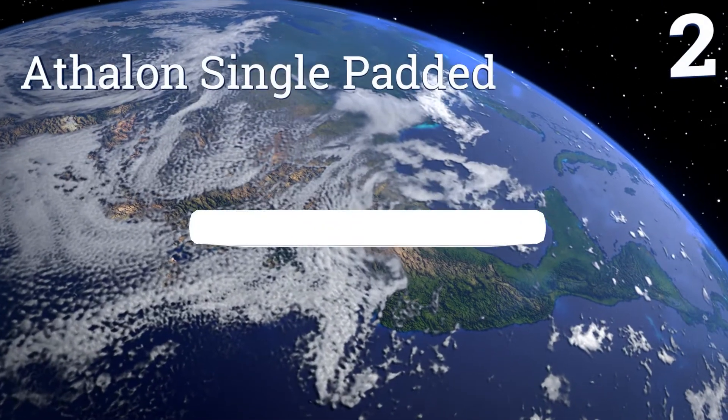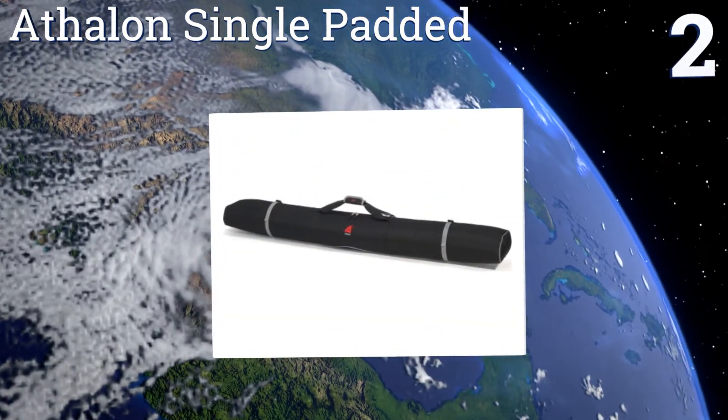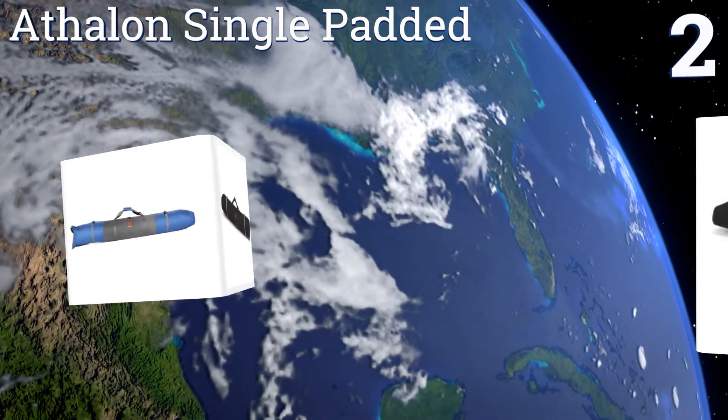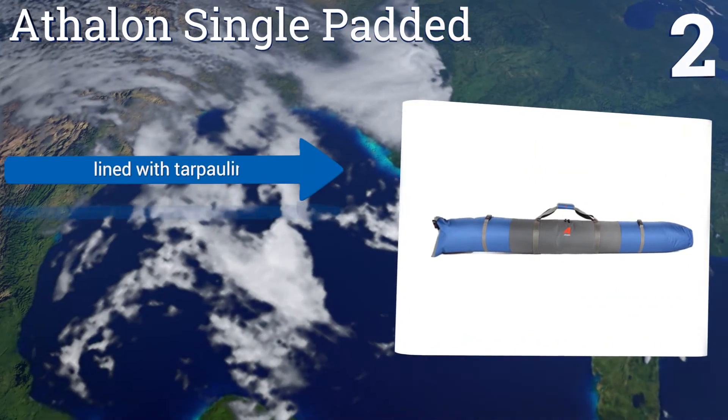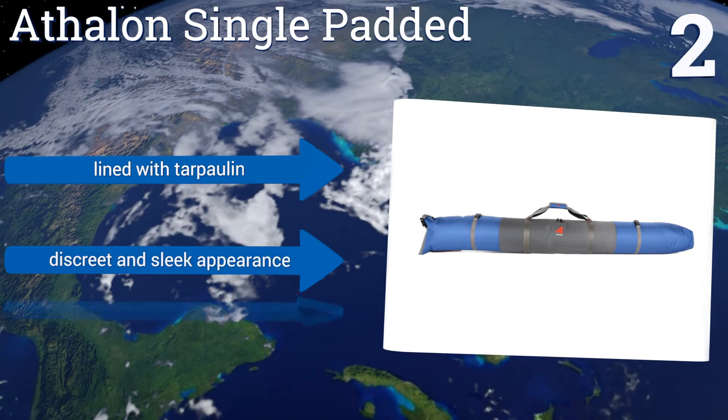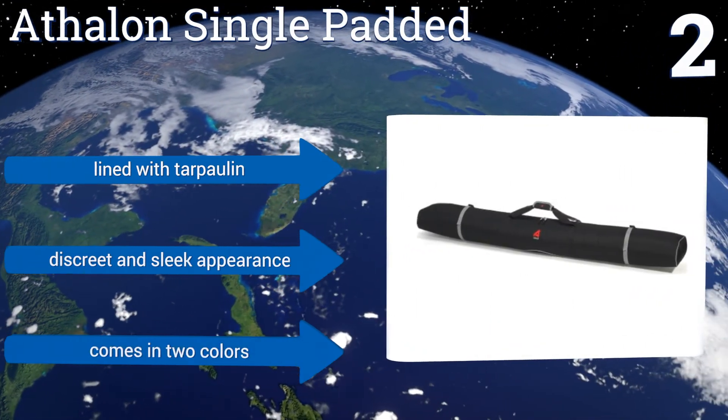At number two, if you're looking to get as much cushioning in your bag at as little cost as possible, the Athalon Single Padded is your best bet. This budget-friendly option puts plenty of buffer between your equipment and the outside world and should hold up season after season. It's lined with tarpaulin and has a discreet and sleek appearance.